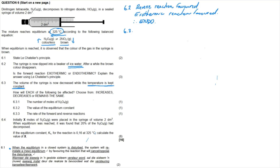Question 6.3.1: how does this change affect the number of moles of N₂O₄? When volume decreases, the reaction favors the direction that produces fewer moles. In the balanced equation, one mole of N₂O₄ decomposes into two moles of NO₂. So products have two moles for every one mole of reactant. With less space available, the reverse reaction is favored, decreasing NO₂ and increasing N₂O₄. Therefore the number of moles of N₂O₄ increases.